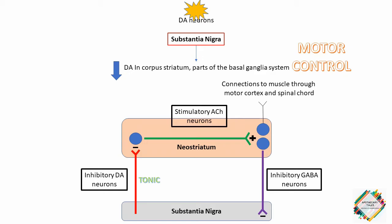In Parkinson's disease, there is a destruction of the cells in the substantia nigra that results in degeneration of the nerve terminals that secrete dopamine in the neostriatum. Thus the normal inhibitory influence of dopamine on the cholinergic neurons present in the neostriatum is significantly diminished, resulting in an overproduction or relative overactivity of acetylcholine by the stimulatory neurons. This triggers a chain of abnormal signaling resulting in loss of control of muscle movements.